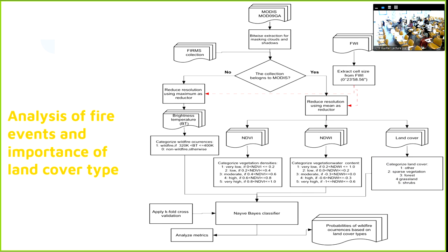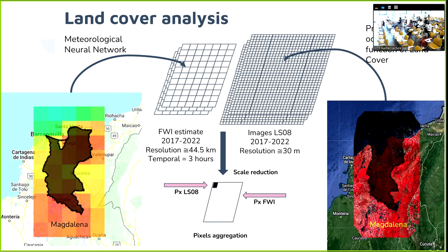This feeds into the land cover classification, and we used a meteorological neural network to estimate the FWI — the probability of wildfire occurrence.